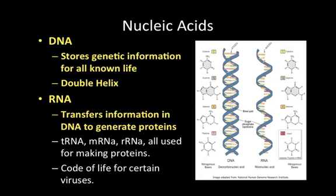DNA stores all the genetic information for all known life and is found in a double helix structure. RNA is important because it transfers the information in DNA to generate proteins, and includes tRNA, mRNA, and rRNA — all used for making proteins. One exception: certain viruses use RNA as their code of life instead of DNA, meaning they have an RNA code rather than a DNA code.